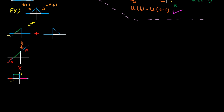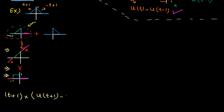Above 0, the window is 0, so 0 multiplied by the line gives 0 again. So this function is basically the line t plus 1 multiplied by this window. From the previous example, it's clear that the window is u of t plus 1 minus u of t.